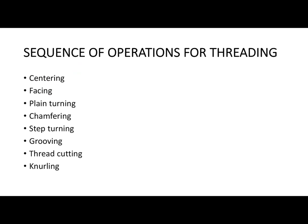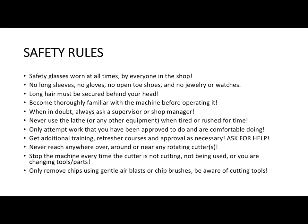For threading, specific steps include thread cutting using a specific tool and a specific control located below the headstock. Once you adjust those parameters, you can set the pitch — the distance between two threads — and the depth of the thread. All these parameters can be changed on the machine to get the desired thread type. The threading process is automatic, not manual. There is also the knurling process.